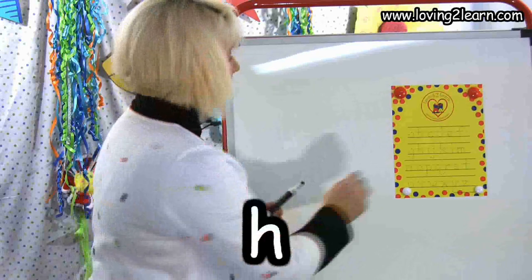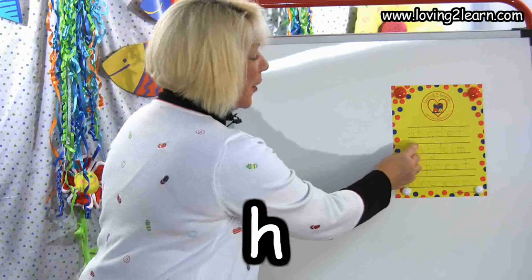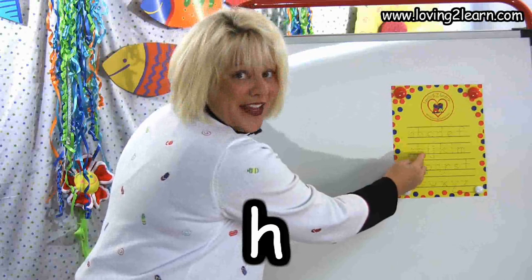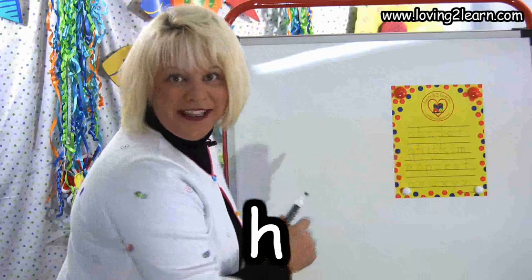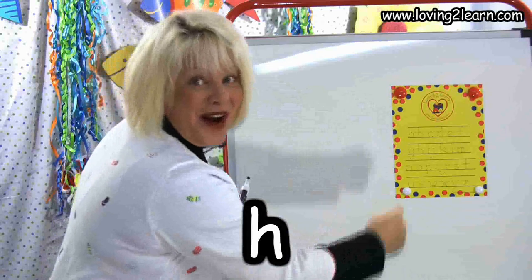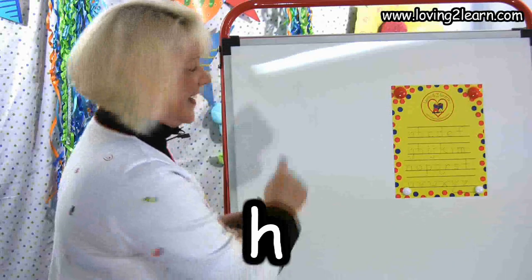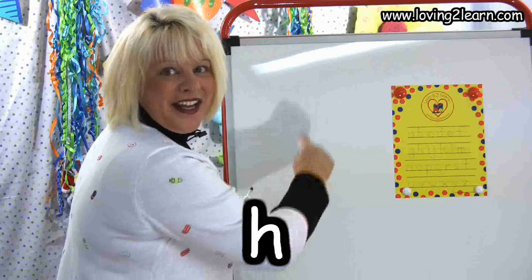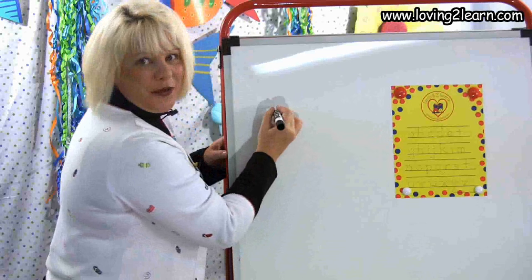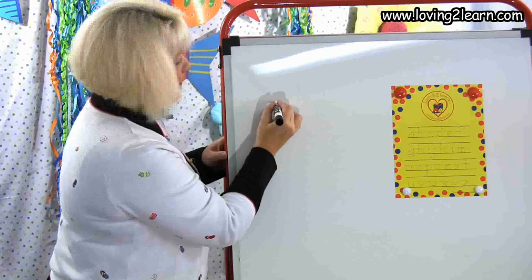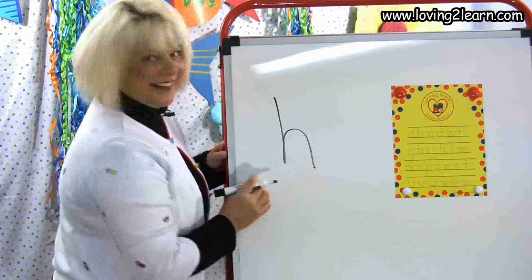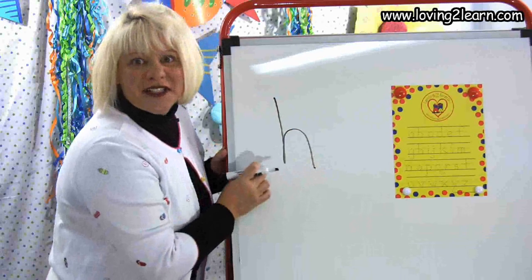The next letter is the letter H. Here we go: straight line down and around the hill. Do it with me in the air: straight line down and around the hill. We'll do it on the whiteboard: straight line down and around the hill. There's that small letter H.